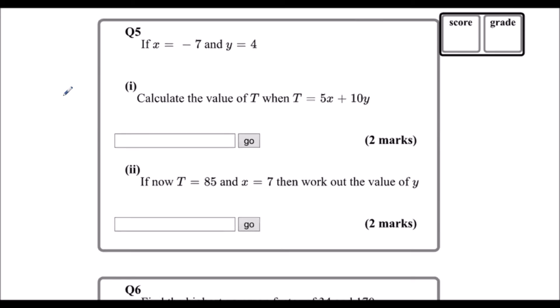Question 5. If x is negative 7 and y equals 4, calculate the value of t when t is 5x plus 10y. So it's 5 times x, so 5 bracket negative 7 plus 10 times y, 10 bracket 4. And I can type that in the calculator. I can type 5 bracket negative 7 plus 10 bracket 4 in the calculator, and the calculator will work it out for me. I could also type 5 times negative 7 plus 10 times 4. So 5 bracket negative 7 plus 10 bracket 4, and that gives me 5.